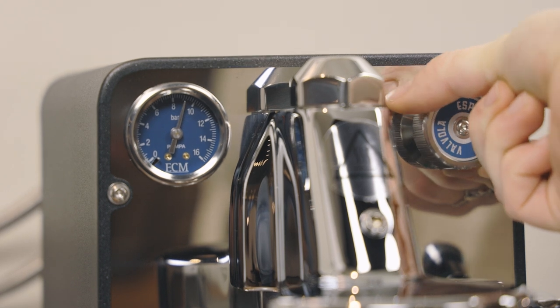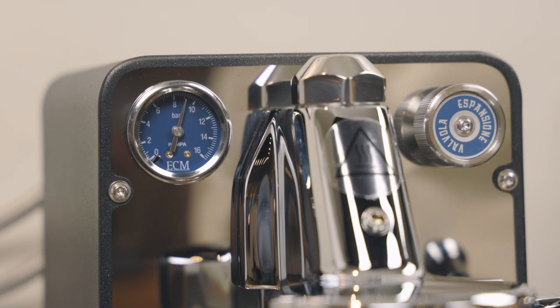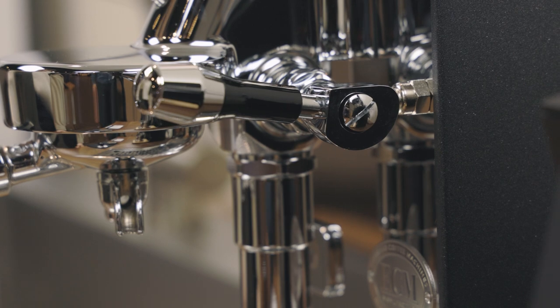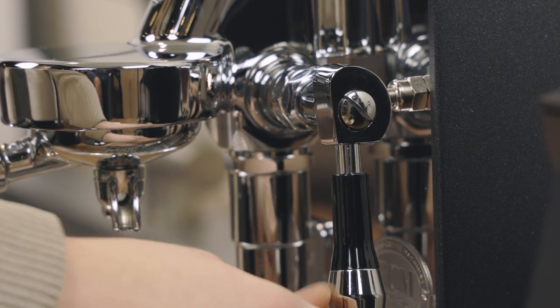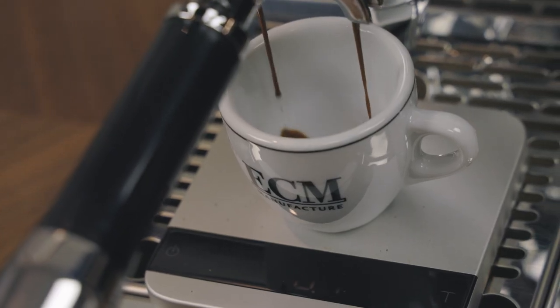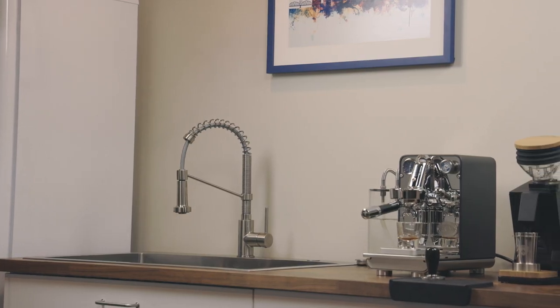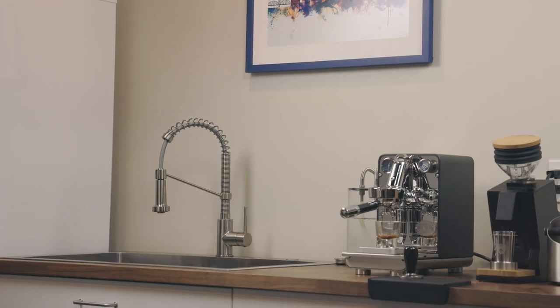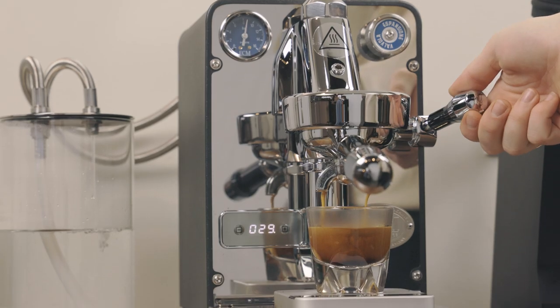Once you reach your desired pressure indicated on the pressure gauge on the left side of the machine, lower the brew lever. Once you've set up your machine, you're ready to begin pulling shots. For tips on pulling a great shot of espresso and how to clean and care for your machine, check out the links below. Enjoy your new machine!